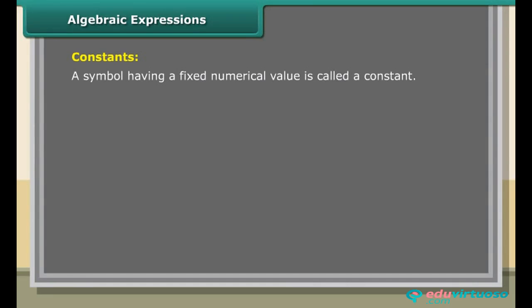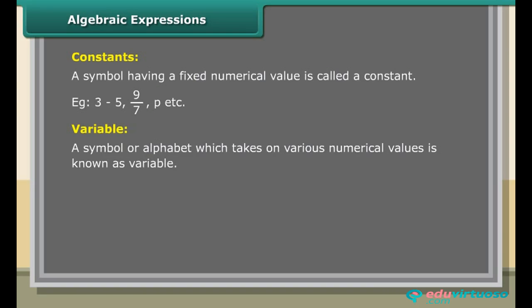Algebraic Expressions — Constants: A symbol having a fixed numerical value is called a constant. Examples: 3, −5, 9/7, π, etc. Variable: A symbol or alphabet which takes on various numerical values is known as a variable. Example: the circumference of a circle C = 2πR, where R is the radius. Here 2 and π are constants; C and R are variables.